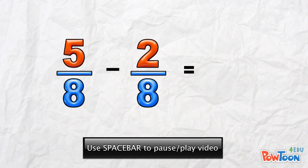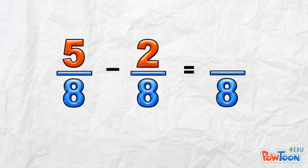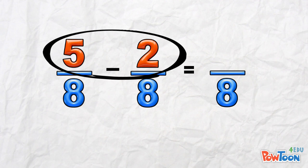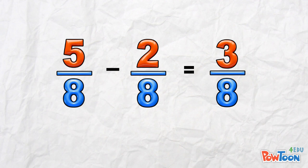The denominator stays. We do our subtraction with the numerators. 5 minus 2 is 3. 3 eighths.